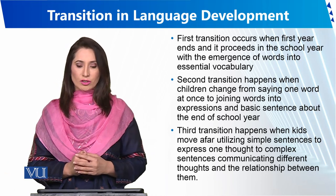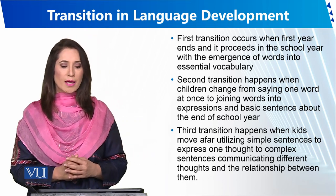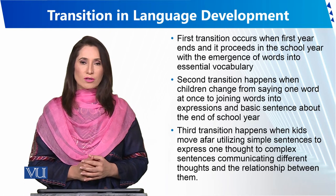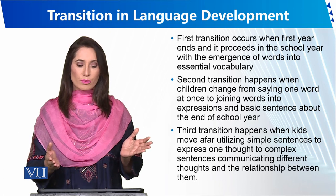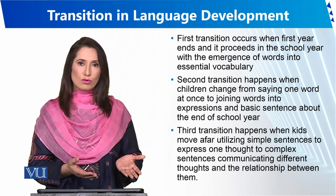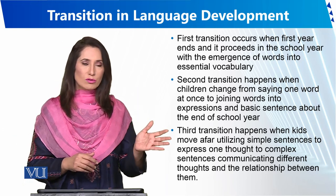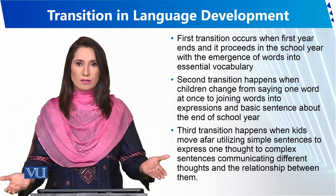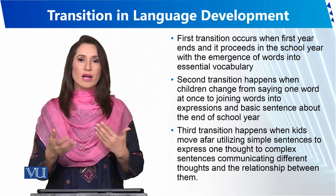The second transition happens when children change from saying one word at a time to joining words into expressions and basic sentences, around the end of the school year. This transition can also mean moving from public school to private school, or from Urdu medium to English medium. Transition can be of different types depending on the child's moves.